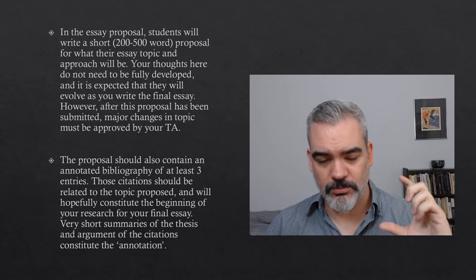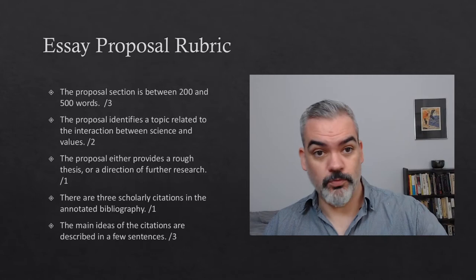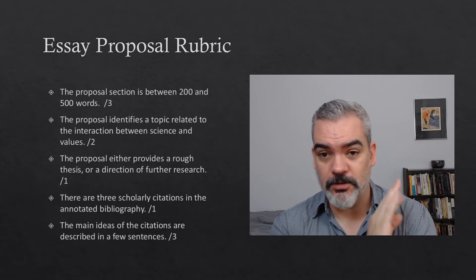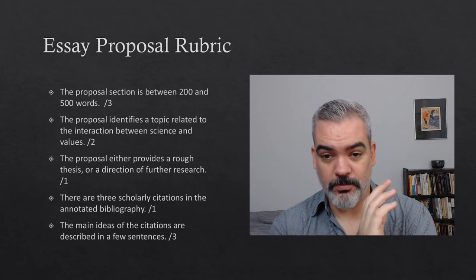The proposal section is 200 to 500 words, and then there's the annotated bibliography — at least three entries, but three is the number to go with. More is unnecessary, less is bad, but more doesn't help you. Unlike a lot of written assignments in the humanities, this is one I think you could genuinely get 100% on. I do expect some students to get 100% on this proposal because there's a very specific list of things to tick off. The overall mark is going to be out of 10.